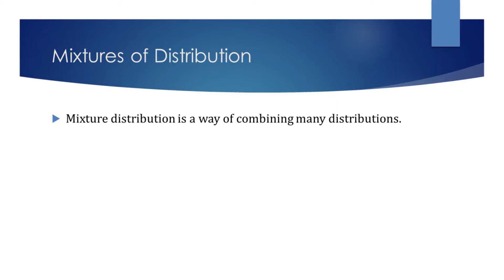Mixture distribution is defined by combining many simple distributions called components. Let's now consider an example of a mixture distribution with two Gaussian components.